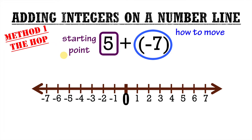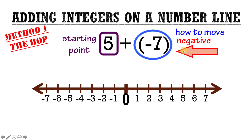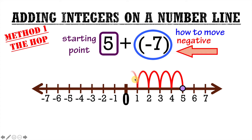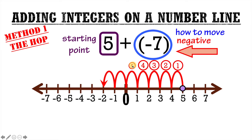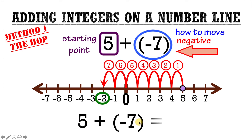Here's another example — let's go back to method 1, the hop. Our starting point is 5, and our second number is negative 7, which tells us how to move. Since it's negative, that means we're moving to the left on the number line. I'm going to go to 5 and plot a point there, then hop 7 places to the left, numbering each hop: 1, 2, 3, 4, 5, 6, 7. And where we end up is the sum — in this case, negative 2. So 5 plus negative 7 equals negative 2.